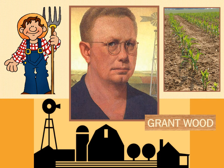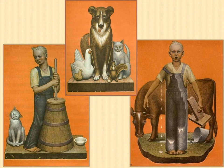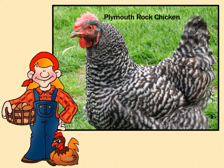Grant Wood grew up on a small farm in Iowa until he was 10 years old and then moved to town. He brought farm life into many of his paintings. His self-portrait shows that he came from a farm — we can see crops and also a water mill in the background. Grant Wood's family raised cows, turkeys, ducks, and chickens. He loved all his farm animals just like pets. Can you guess which pet he loved the most?